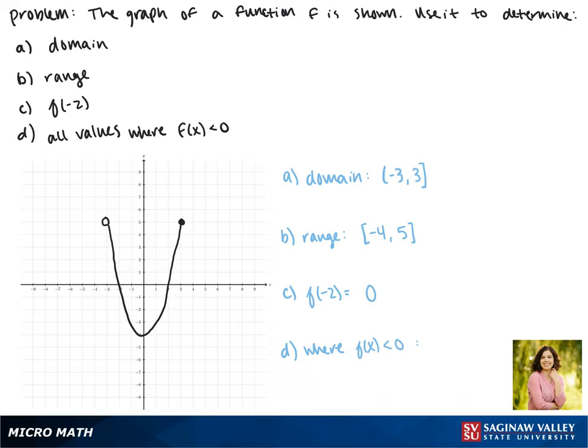Now for the interval where f of x is less than 0, less than 0 means negative. So we're looking at where all of our y values are negative. So this goes from negative 2 to 2. Since we're looking for the interval where it's less than 0 and not equal, these will get parentheses.